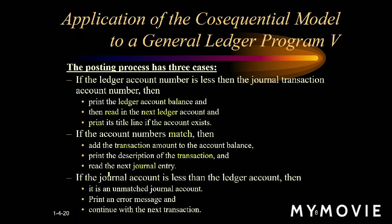The third condition is: if the ledger account number is greater than the journal transaction account number. In this case it is an unmatched condition — the journal account entry is not available in the ledger account. In this case we have to print an error message and move to the next transaction, because we have a mismatch — we print an error message and handle it.